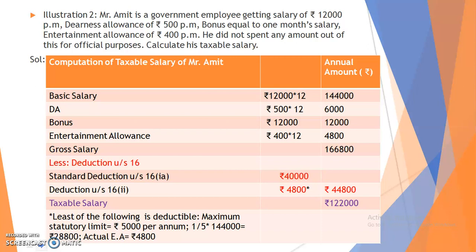Now we will give reductions under Section 16. Two reductions will be taken: first, standard deduction under Section 16(1A) of Rs. 40,000; and second, entertainment allowance deduction under Section 16 subsection 2. For entertainment allowance, the least of the following is deductible: (1) maximum statutory limit of Rs. 5,000 per annum, (2) 20% of basic salary, and (3) actual entertainment allowance received. The least amount works out to Rs. 4,800. Deducting this from gross salary gives Rs. 1,22,000 as taxable salary.